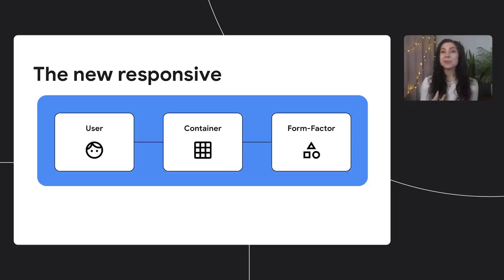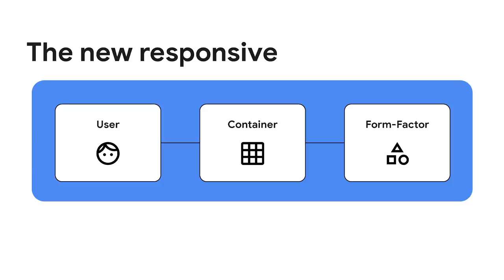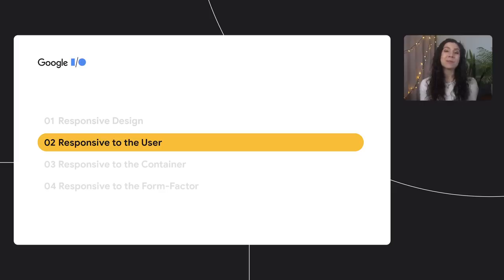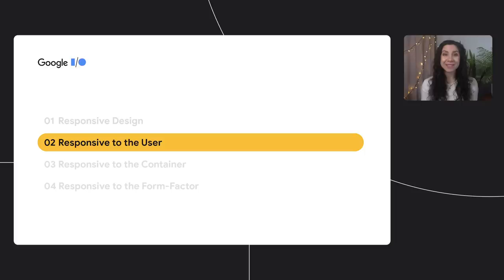These updates include user preference-based media queries, container queries, and media queries for new screen types, like foldable screens. So let's talk about some of these new technologies and what it means to be responsive to the user, the container, and to the form factor. Let's start with being responsive to the user. New preference media queries give us the ability to style web experiences that align with our users' own specific preferences and needs.